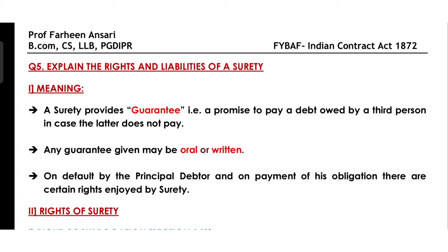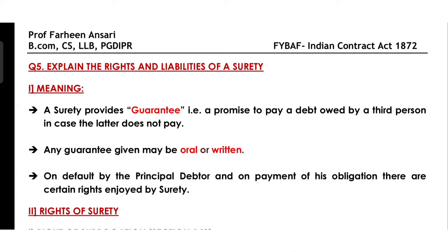Now, we saw in the previous video lecture that the surety is the person who guarantees the creditor on behalf of the principal debtor, against the loan of the principal debtor. A guarantee can also be given orally or in writing. Now, if the principal debtor did not discharge his loan to the creditor, then the surety would have to complete the payment obligation. So in this case, the surety would enjoy certain rights over the principal debtor. What rights are they? Let's understand point by point.